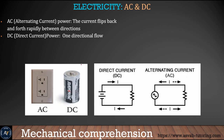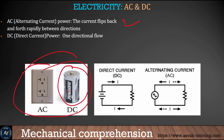AC means alternating current — it changes direction every second. DC current flows in a single direction, like a battery. AC current is what we normally use at home.